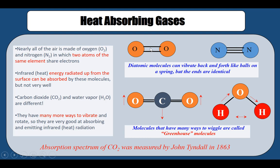Our air has 99% nitrogen and oxygen combined together — about 78% nitrogen and about 21% oxygen, so together that makes 99%. The remaining gases are argon and many other gases.